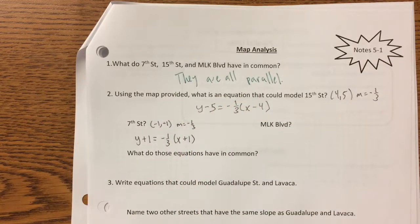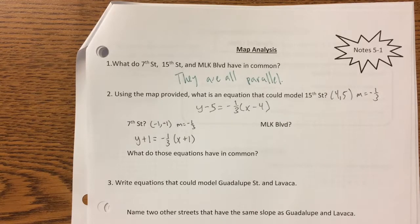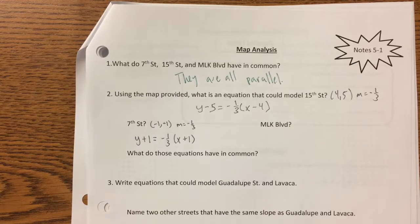We're going to do MLK Boulevard as well. But what do you notice so far about these two equations? Same slope, right? Why do you think that is? Because they're parallel. That's going to be the key takeaway from today — parallel lines have the same slope. If you remember nothing else from today, remember that: parallel lines have the same slope.